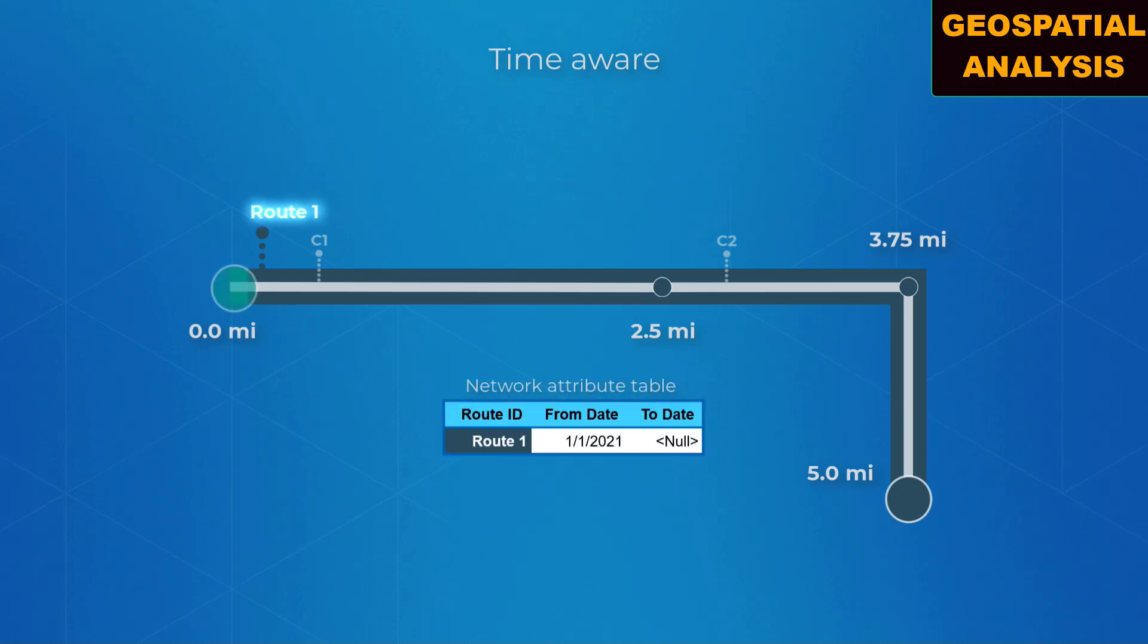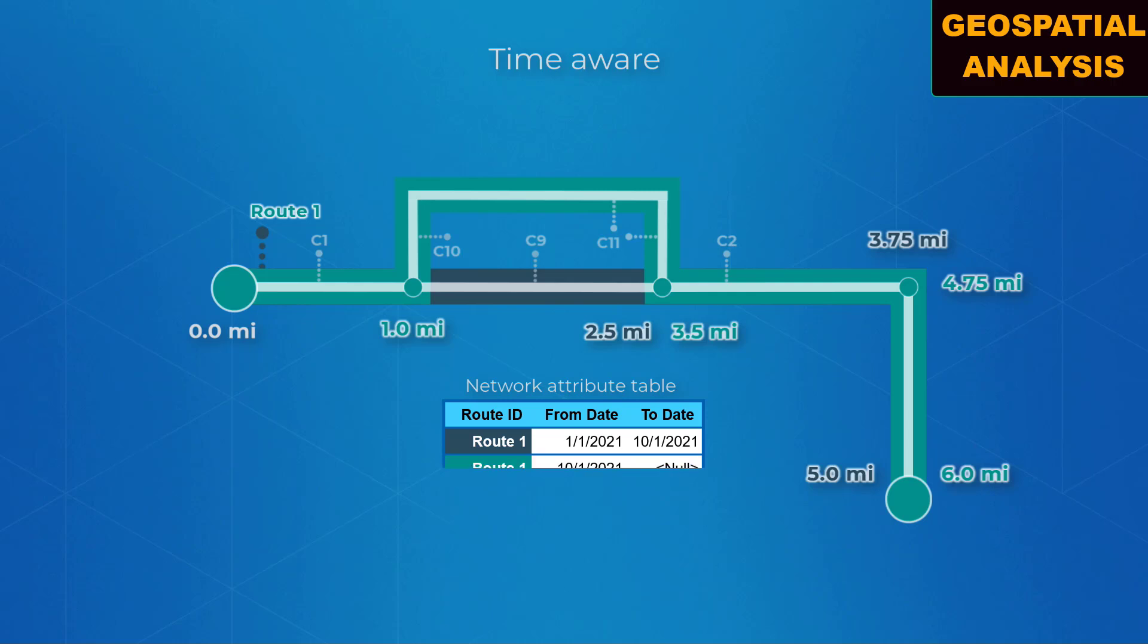For example, if Route 1 is realigned effective October 1, 2021, a second record is created. The new route feature has the same route ID, but a different shape calibration to reflect the realignment.